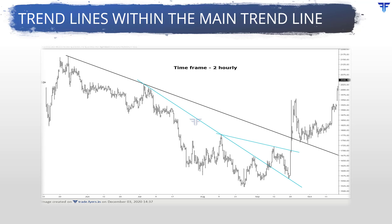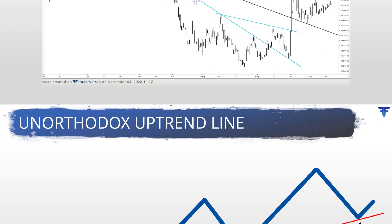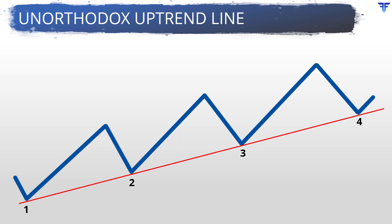Let us now move on to the unorthodox way of drawing a trendline. In the previous video, we spoke in detail about the traditional way of drawing an uptrend line and a downtrend line — an uptrend line is drawn connecting rising supports, and a downtrend line is drawn connecting falling resistances. This is not all, however; there are other, not so widely used methods of drawing trendlines.